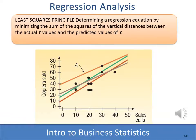Regression analysis uses something called the least squares principle. The equation we get is not perfectly precise — it won't allow you to perfectly predict a value of the dependent variable; it will vary a little bit. But the regression equation will minimize the error between the predicted values and the actual values, plotting a straight line that minimizes that error.